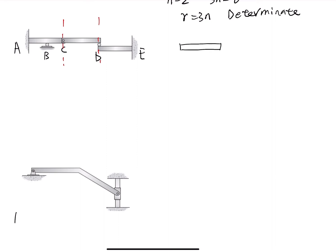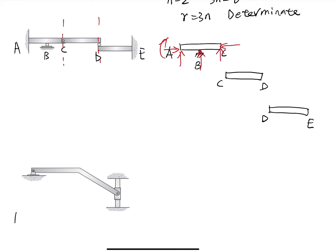Drawing the beam segments: the first is A to C with a roller support at B, the second is C to D, and the third is D to E. We then put reaction forces on each segment. At support A, it is a fixed support with three reaction forces. At support B, it is a roller support with one reaction force. At support C, it is a pin support (hinge), so we have two reaction forces, which also appear on the adjacent segment. At support D, it is a roller support with one reaction force on each adjacent segment. At support E, it is a fixed support with three reaction forces.